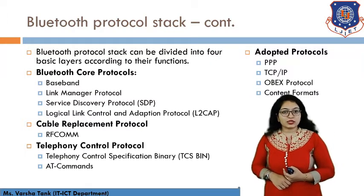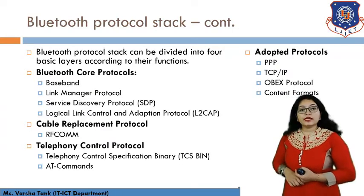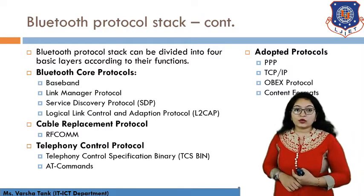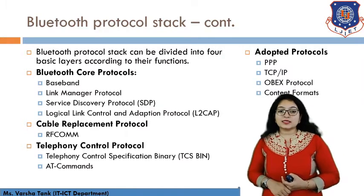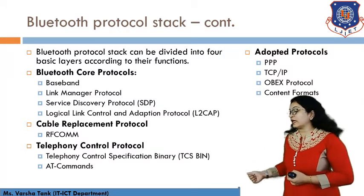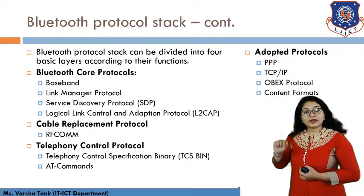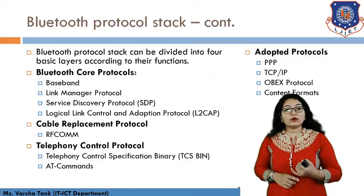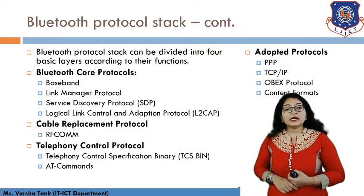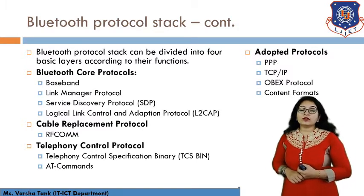The Cable Replacement Protocol layer uses RFCOMM for radio frequency communication. The third category is the Telephony Control Protocol, which includes TCS Binary (Telephony Control Specification Binary) and AT commands. The fourth and final category is Adopted Protocols, which includes PPP, TCP/IP, OBEX, and content format.